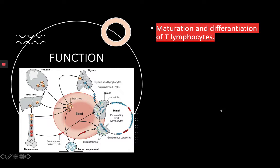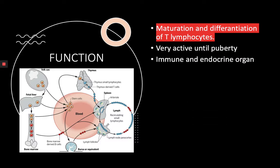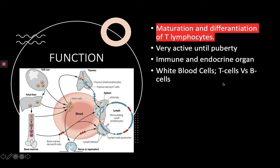So what is the function? The main function is the maturation and differentiation of T lymphocytes. From the time you're conceived until puberty, your thymus gland is very active. It serves both the immune and endocrine systems. To understand the thymus's immune role, you really need to know the difference between T cells and B cells.